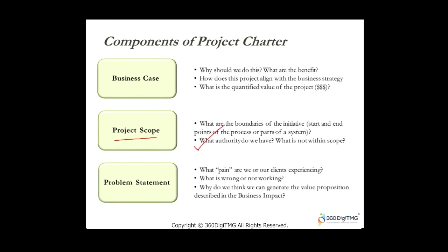We'll learn about SMART goals with an example coming up shortly. The goal statement tells how success will be measured — what specific parameters will be measured, which are nothing but your CTQs: reducing delivery time, improving quality, increasing productivity, reducing processing time, or increasing occupancy percentage. The goal statement must be SMART.